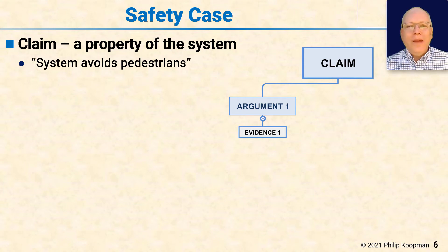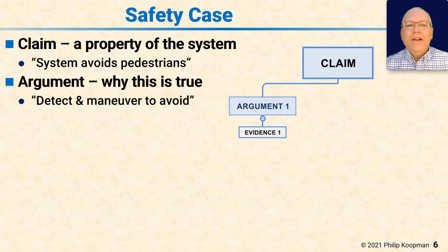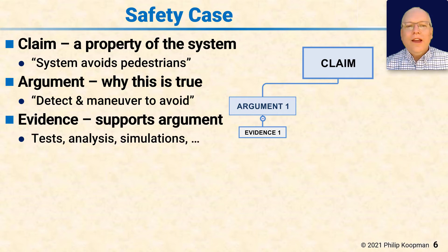One is a claim or a goal, such as 'system avoids pedestrians' — that would actually be a subset of all the claims, but it's an example. There's an argument why this is true. For example, 'we plan to detect and maneuver to avoid pedestrians.' And some evidence. You can't just argue — you have to have some evidence behind the argument.